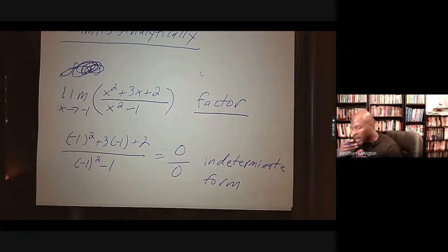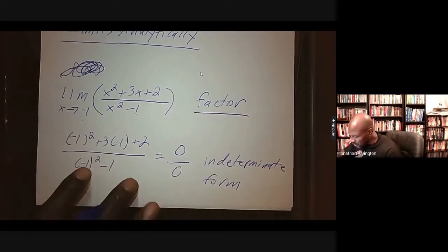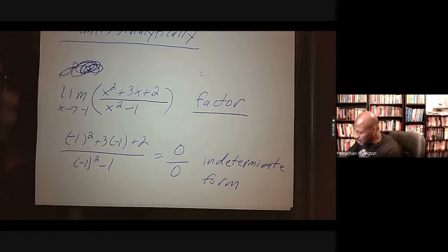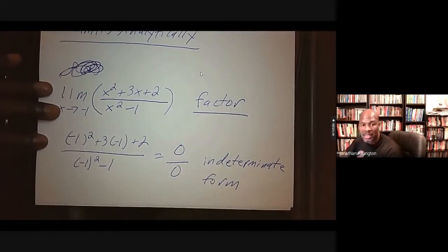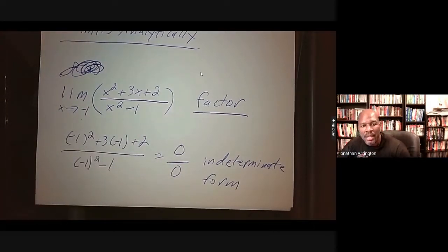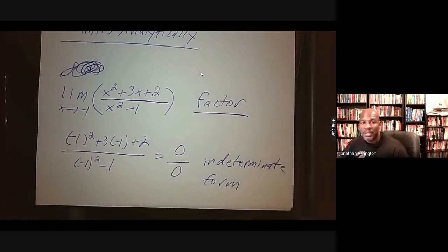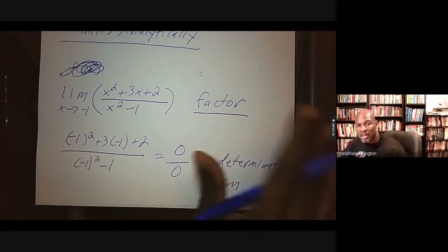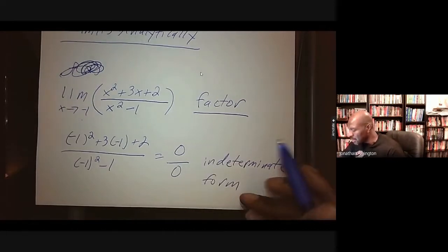That's the indeterminate form — 0 over 0. This is good news, because when you plug a number in and get 0 over 0, that's a signal of hope. It means there's a very good chance that this limit exists. So when I get 0 over 0, I'll go into factoring and simplifying. If I get a non-zero number over 0, like 8 over 0, the limit doesn't exist and I would just stop.